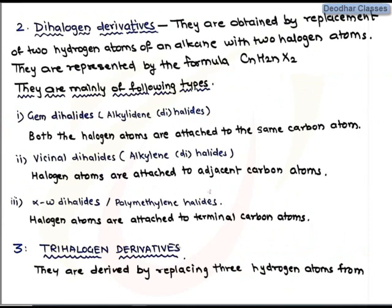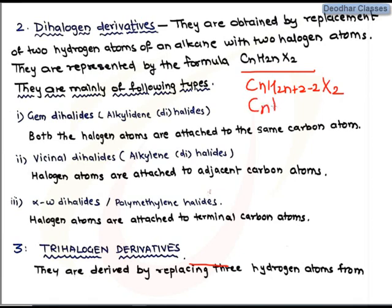The next category is dihalogen derivatives of alkanes. When two hydrogen atoms of an alkane are replaced with the same or different halogen atoms, we get dihalogen derivatives. Their general formula is CnH2n X2, derived from the alkane formula CnH2n+2 by removing two hydrogens and adding two halogens.